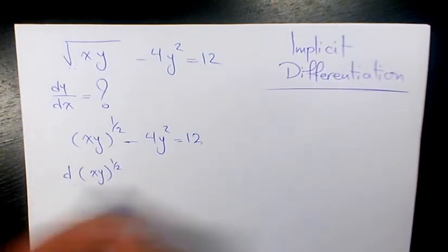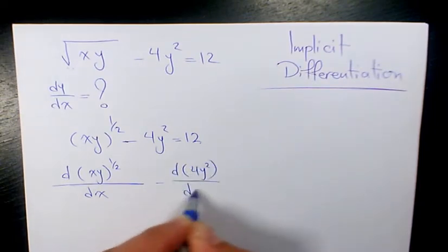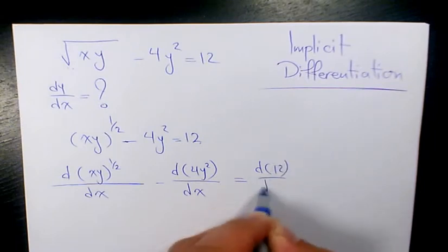So that's going to be derivative of xy to the power of one half with respect to x, minus derivative of 4y squared with respect to x, equals to derivative of 12 with respect to x.